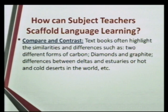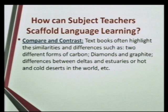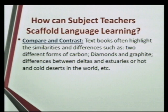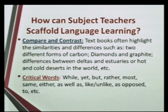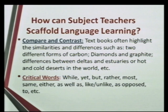Another type of text structure is compare and contrast. In a chemistry classroom, you might teach them about diamonds and graphite — two different forms of carbon. You will ask students to compare and contrast: they come from the same root element, carbon, but they are different. Similarly, compare and contrast the difference between hot and cold deserts. Critical words used here are 'while,' 'yet,' 'but,' 'rather,' 'most,' 'same,' 'either,' 'as well as,' 'like,' 'unlike,' 'as opposed to,' etc.